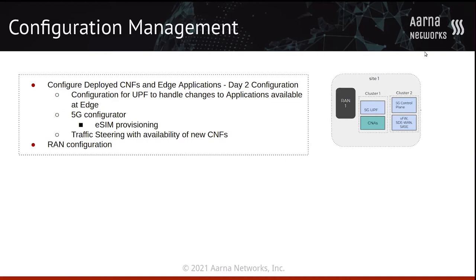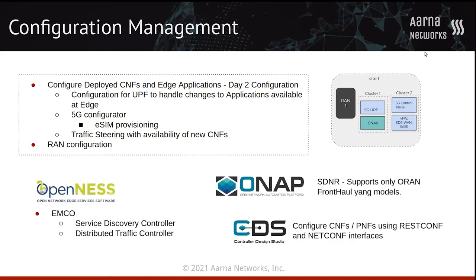Traffic steering is another important functionality based on availability of new CNFs. We might want to redirect or choose a different channel for serving a particular request locally versus sending it to the cloud. For this, we will use service discovery and distributed traffic controller aspects from EMCO, SDNR from ONAP providing Fronthaul Yang models, and another ONAP project CDS which helps configure CNFs and PNFs at the edge using RESTCONF and NETCONF interfaces.